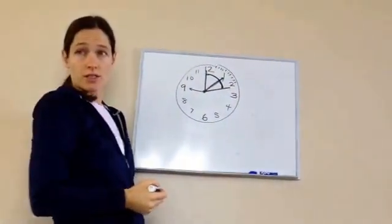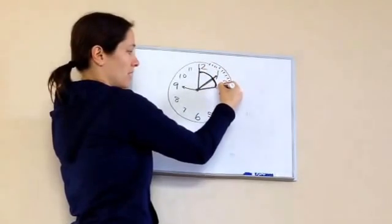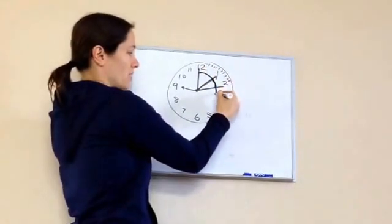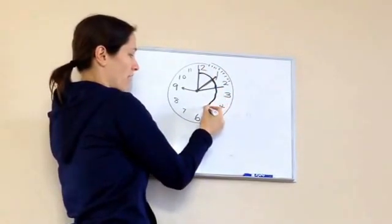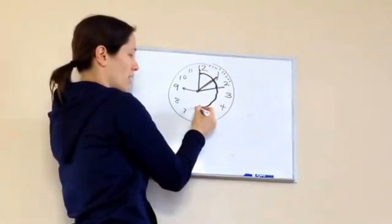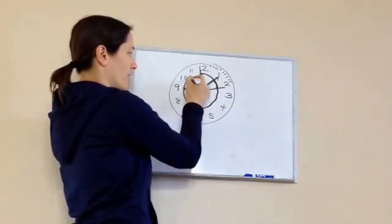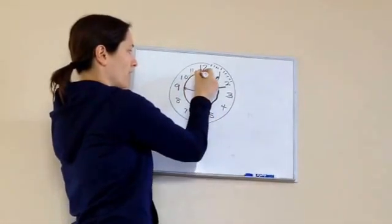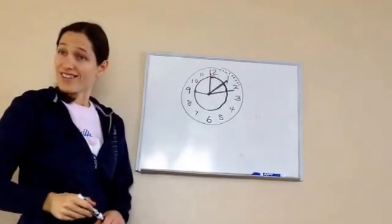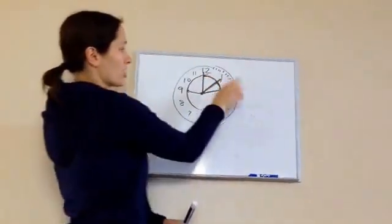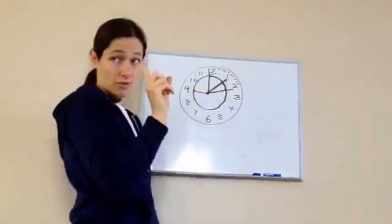From 1 to 2 would be 5 minutes, so from 12 to 2 would be 10 minutes. So this is 5 minutes, 10, 15, 20, 25, 30, 35, 40, 45, 50, 55, 60. Isn't that cool? So each time it's 5 minutes — remember that.